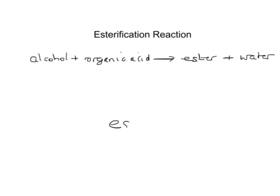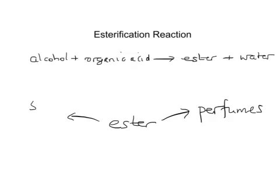The ester that is made is used for two main things: first, for making perfumes, and secondly, as a solvent — for example, in nail varnish.